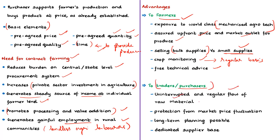For the trader, the advantages are an uninterrupted and regular flow of raw material, and protection from fluctuations in market pricing since they pay only the pre-agreed price. It also gives the trader the possibility of long-term planning and business expansion, along with a dedicated supplier base. We have discussed what contract farming means, why it is required, its advantages for farmers and traders, and important aspects of the Tamil Nadu Contract Farming Act.